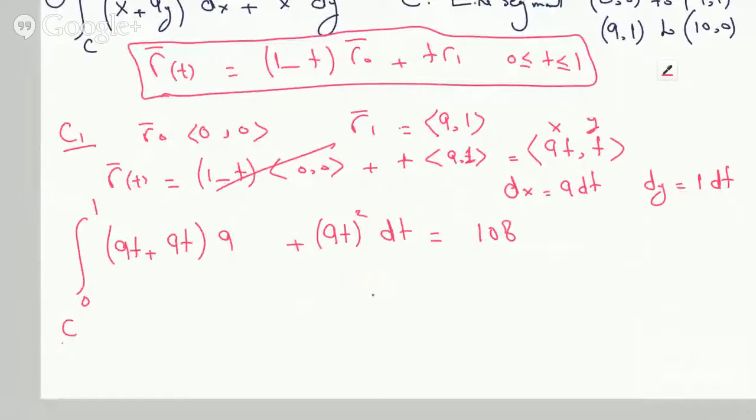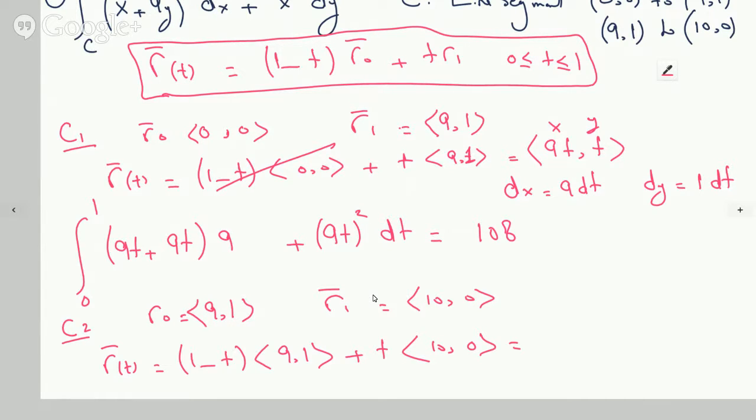And for C2, now my R0 is (9,1), because my initial point changed, going from (9,1) to (10,0) along the second segment, and my R1 is now (10,0). Plug it again into R of t, so we will get (1 minus t), which is a scalar quantity multiplying (9,1), and we will add that to t multiplying (10,0). So we will get 9 minus 9t plus 10t will be plus t, and here we have 0 and just simply 1 minus t.